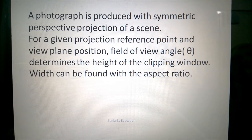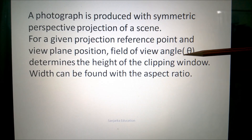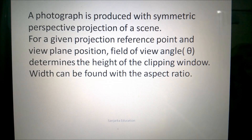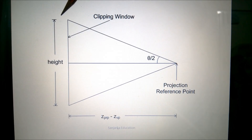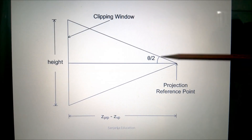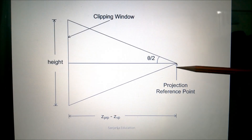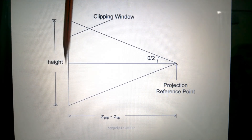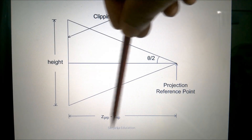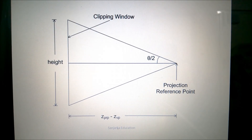Now we will discuss symmetric perspective projection frustum from the context of photography. The cone of vision in photography can be referred to as the field of view angle, which I am referring to as theta. In the diagram, the height of the clipping window is shown here, and this is the field of view angle, with half of it being theta over 2. The distance between the clipping window and the projection reference point is shown here — it is the difference in the Z coordinate, since we are looking along the Z axis and X and Y coordinates remain the same.